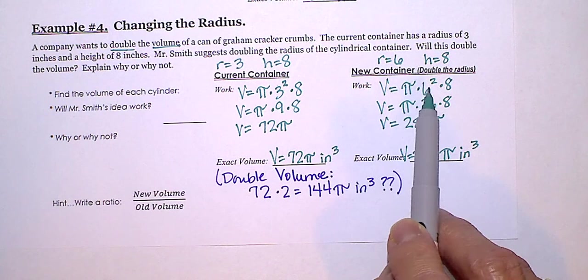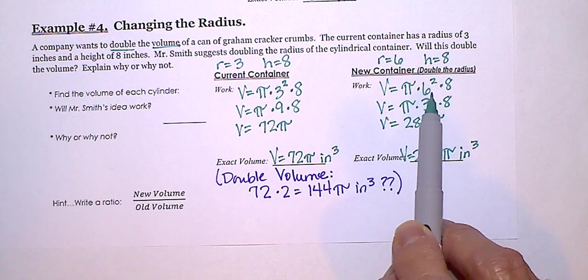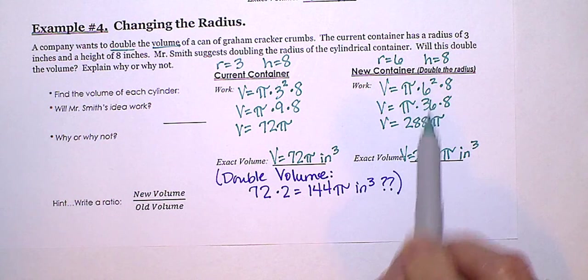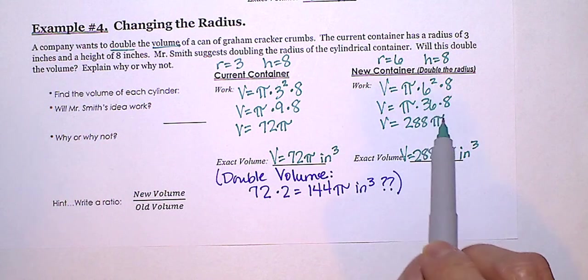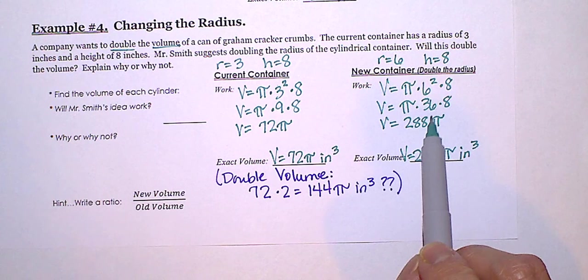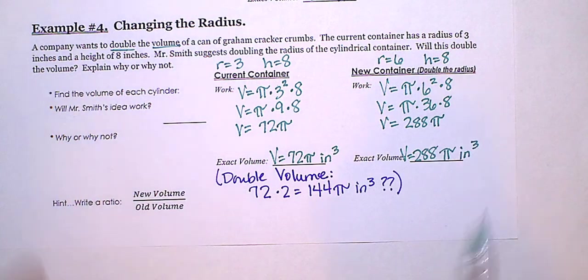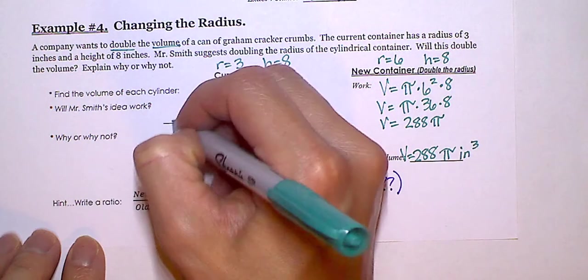Because keep in mind, after we double the radius, we have to square it. Because that's what the exponent is. And when we square a number, it gets even bigger. So, will Mr. Smith's idea work? No.